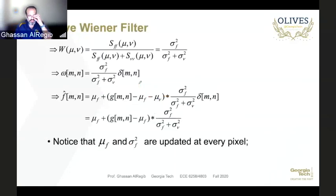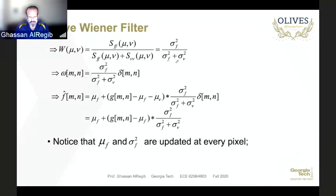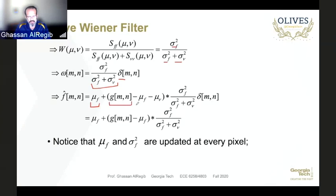With this model the three assumptions still hold: wide-sense stationary locally, noise uncorrelated with signal, and additive noise. The power spectral density for f is σ²_f, and S_gg = σ²_f + σ²_v. The Wiener filter becomes a ratio between these numbers — essentially a scaled delta. Bringing everything back, f-hat equals the mean of f plus a filtered version of the zero-mean signal.